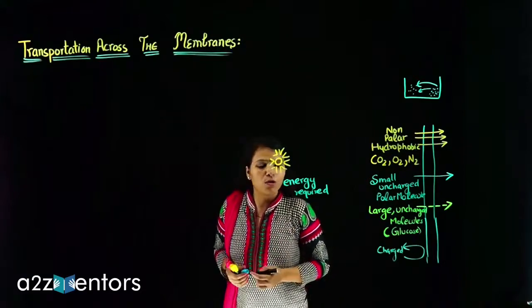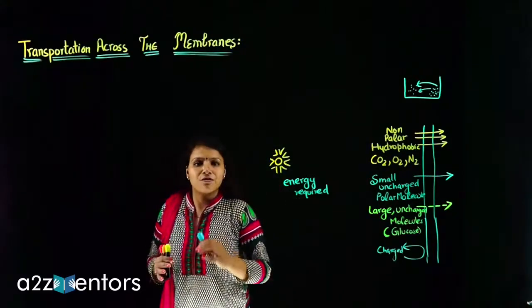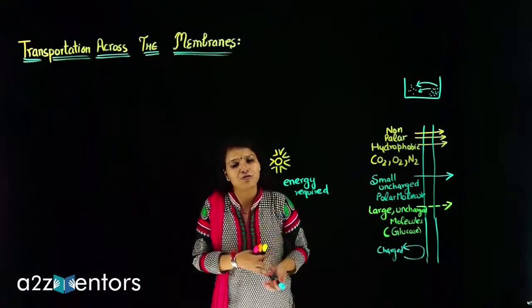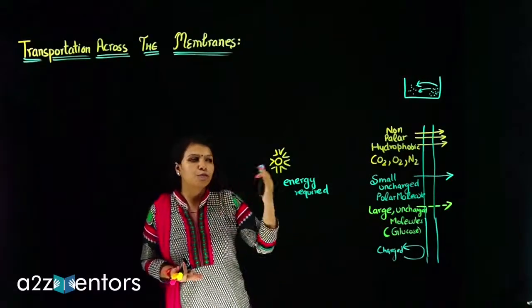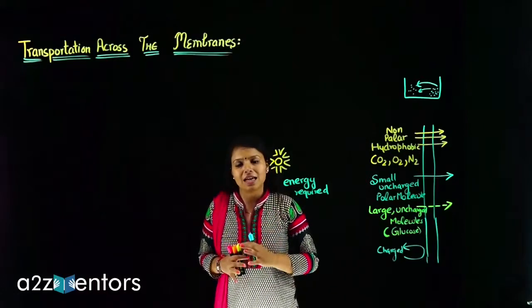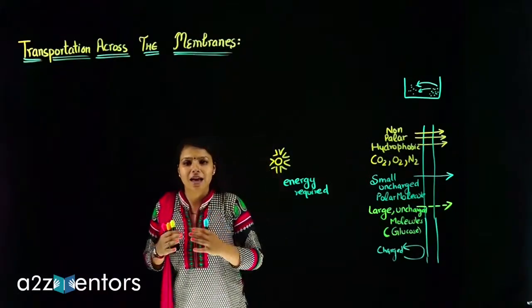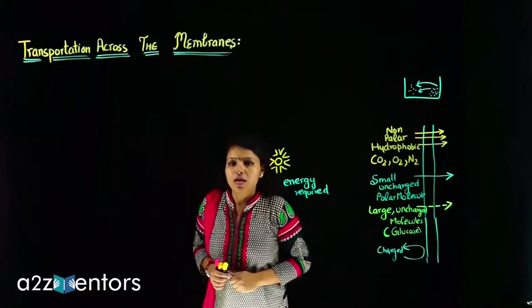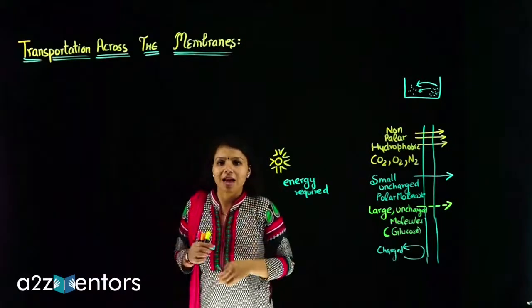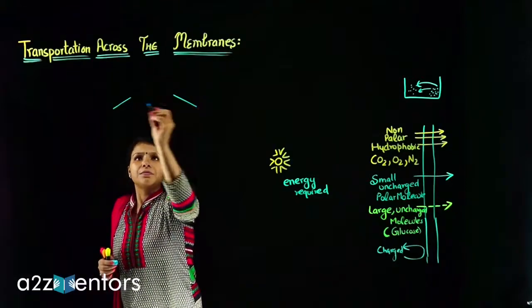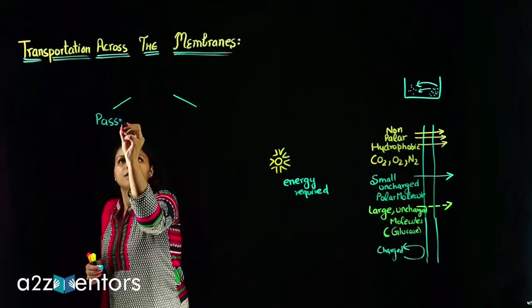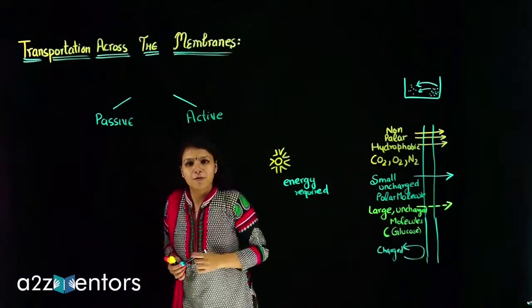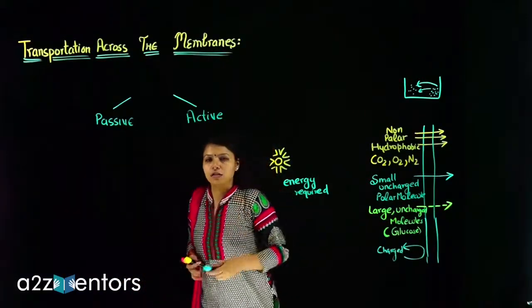Transportation of polar molecules is to a very lesser extent in comparison to non-polar molecules, because of the presence of this hydration shell. But the cell does not only require non-polar and hydrophobic molecules — the cell requires all kinds of molecules. So then, what will the cell do to transport the other molecules? The cell has different types of transportation systems. Two types of transportation are possible: one is passive transportation and another is active transportation.